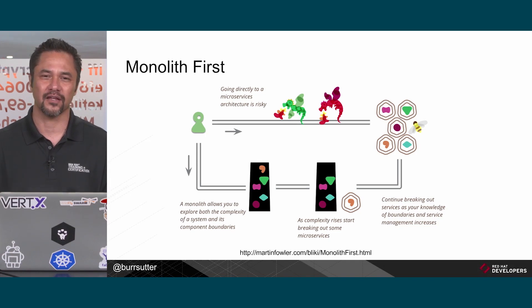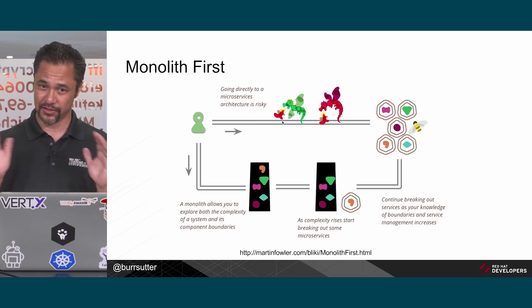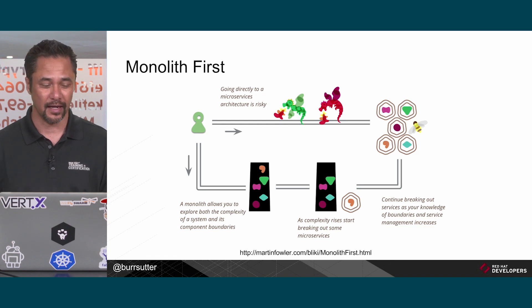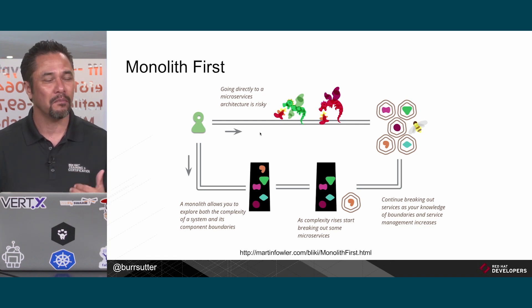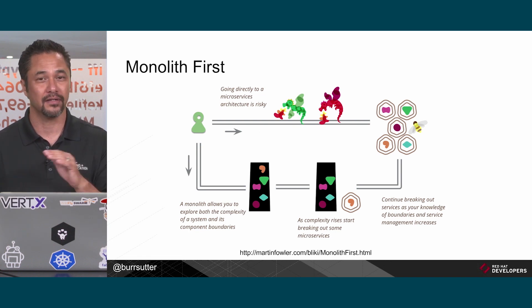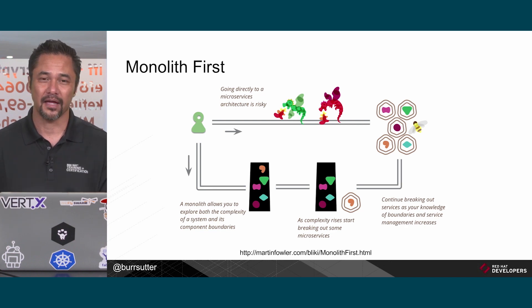Martin Fowler talked about the fact that you may not necessarily want to go directly to microservices architecture right out of the gate for a brand new project. A lot of people have been saying that if you start Greenfield, just start with microservices right away. But Martin actually wrote a nice article suggesting maybe you want to go monolithic first, because you don't yet know all your requirements and you certainly don't know your bounded context.